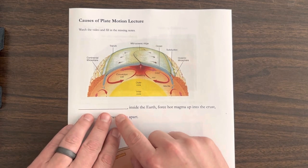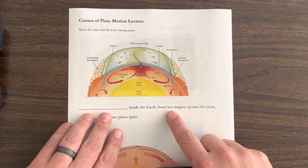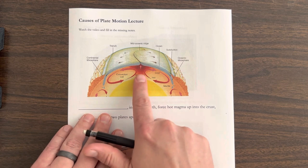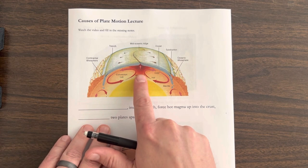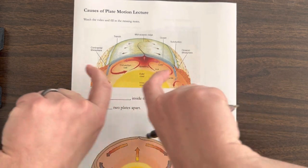Well, these convection currents inside of the earth, they force hot magma up into the crust, and they push these two plates apart.